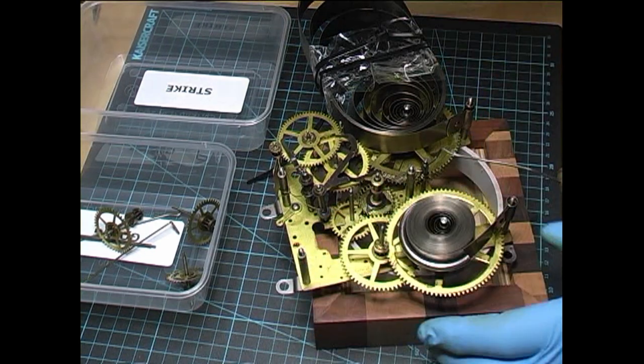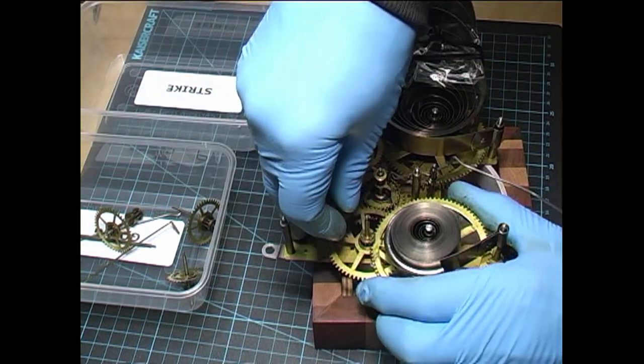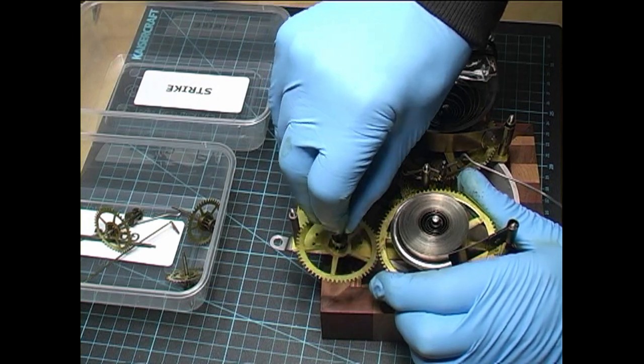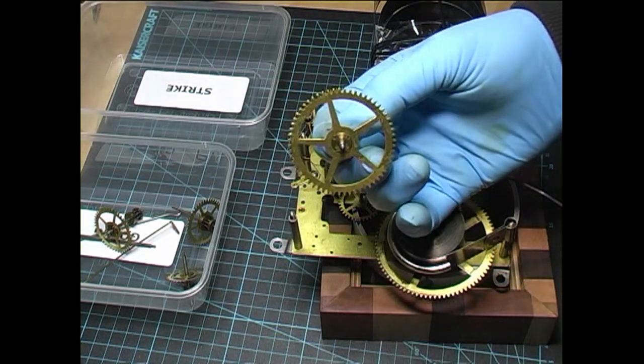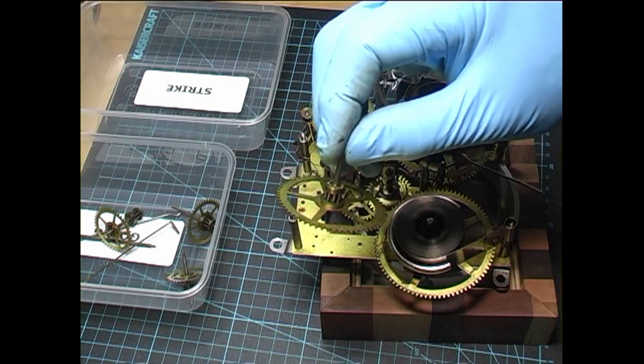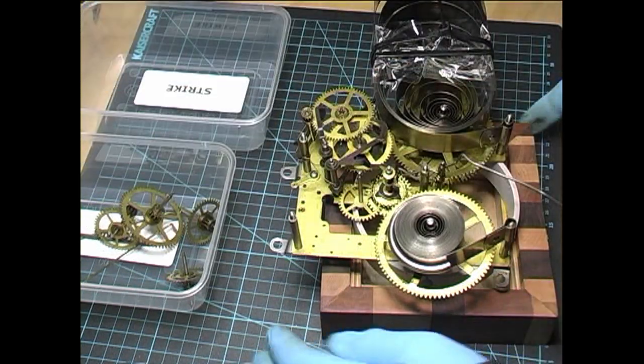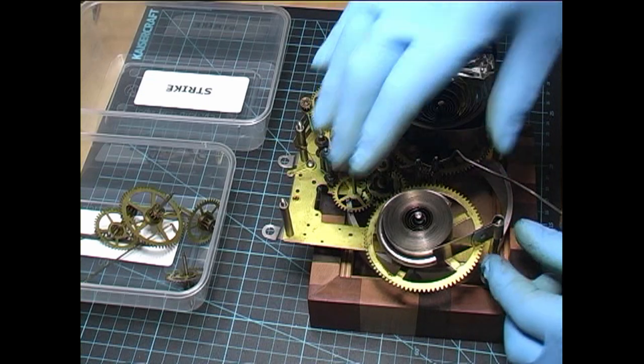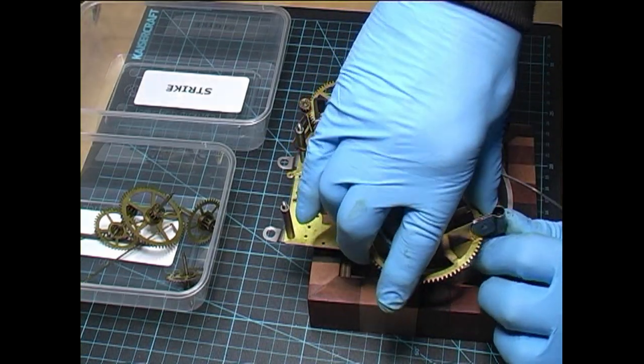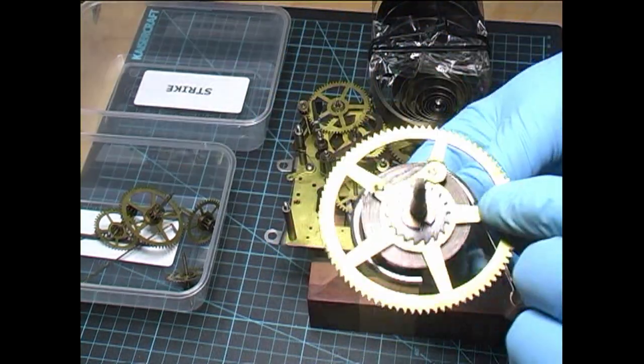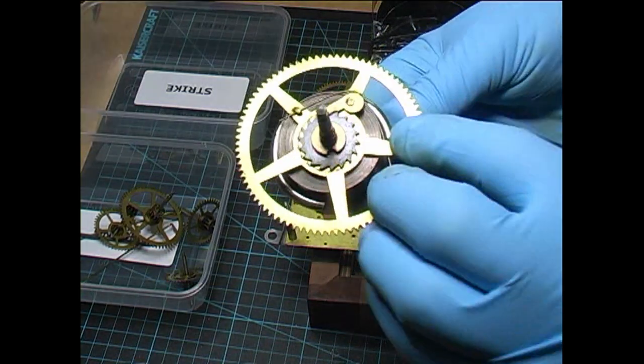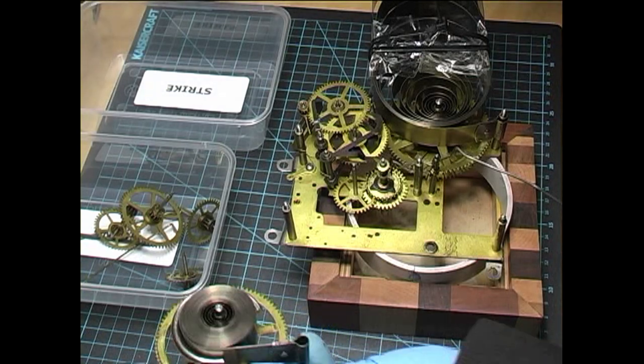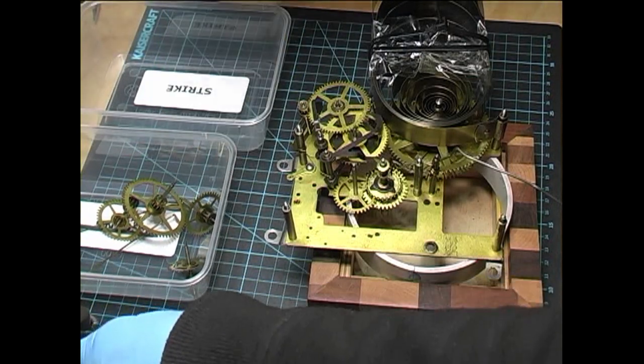We'll take the spring off so we can get the first wheel out. First wheel. We'll remove the spring now. This one's got a click on it which is very nice and a spring. Now remove the strike side.